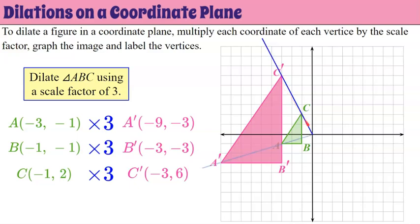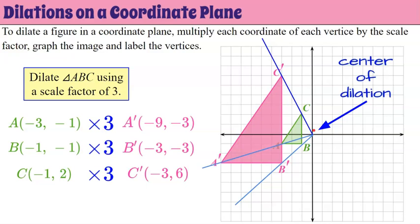The center of the dilation is the origin. If you take the origin and extend lines out, they should pass through the corresponding vertices. This line goes through the center of dilation, which is the origin, then vertex A, then vertex A prime. Center of dilation, vertex B, vertex B prime. Center of dilation, vertex C, vertex C prime. If you've done it correctly, all vertices will line up with the center of dilation.